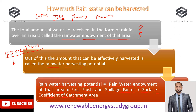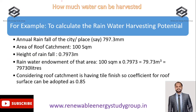For our example, we need to calculate the rainwater harvesting potential where the annual rainfall of the city is 797.3 mm. When designing any system for India or any other country, the weather station or the specific agency handling weather data publishes the rainfall data for that site.